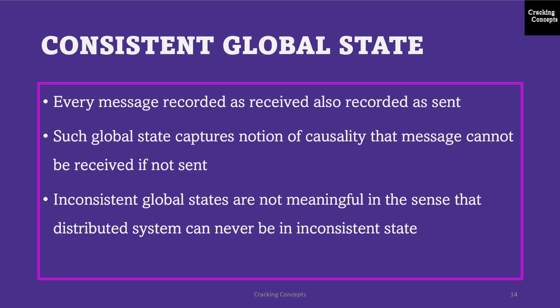In a consistent global state, every message that is recorded as received is also recorded as sent. Such a global state captures the notion of causality — that a message cannot be received if it was not sent. Consistent global states are meaningful global states, and inconsistent global states are not meaningful in the sense that a distributed system can never be in an inconsistent state.